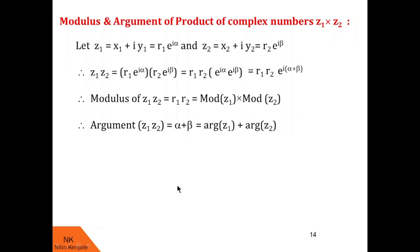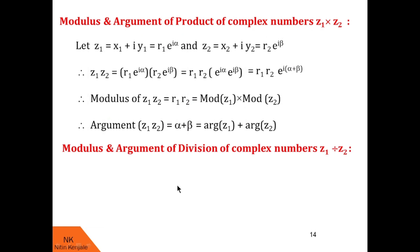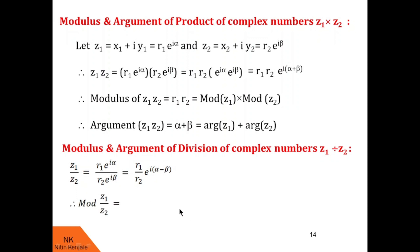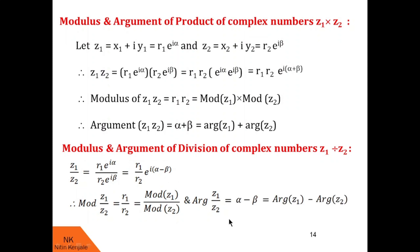Now let us see how to find modulus and argument of the division of two complex numbers. Consider the same complex numbers z1 and z2. So z1 by z2 equals r1 e raised to i alpha over r2 e raised to i beta. Simplifying, we get r1 upon r2 into e raised to i alpha minus beta. So modulus of z1 upon z2 is r1 by r2, that is modulus of z1 upon modulus of z2. And argument of z1 upon z2 is alpha minus beta, that is argument of z1 minus argument of z2.